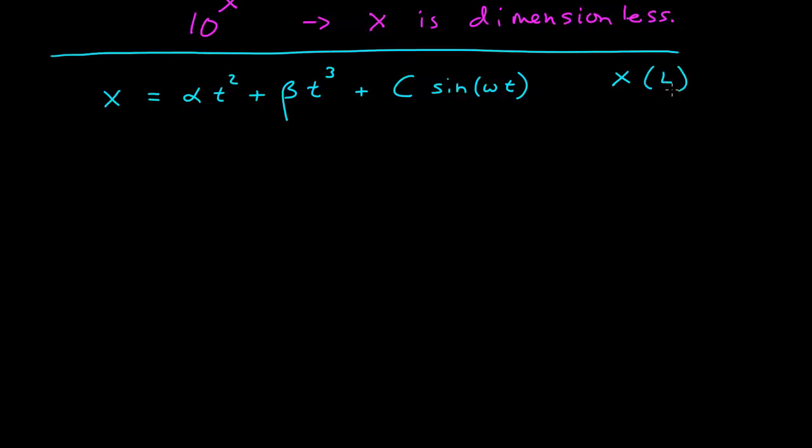x has a dimension of length, t has a dimension of time. So what are then the dimensions of alpha, beta, capital C, and omega?